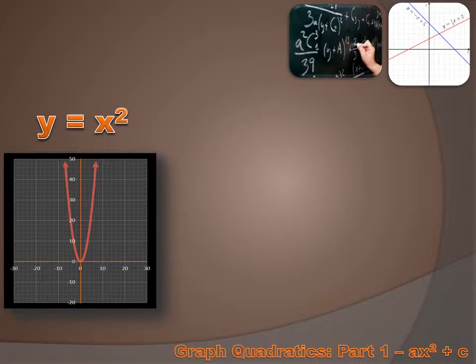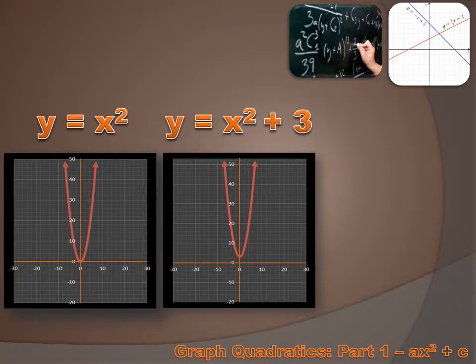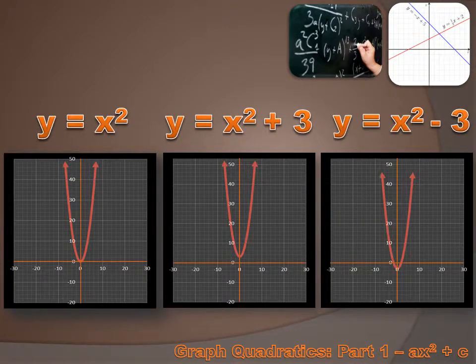Here's our parent function again, y equals x squared. The c value in this equation is zero. What if our c value were three and we were asked to graph y equals x squared plus three? Our a value didn't change, so we're not going to get narrower or wider. But for every value, our y is going to be three places higher than in the parent function, because we're adding three to the x squared. The graph would just be pushed upward three units. And if our c value were minus three, that would just drop the parent graph down by three units.